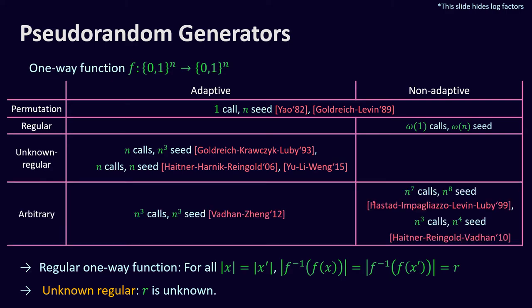Lastly, Hastad, Impagliazzo, Levin, and Luby showed that any one-way function can be used to construct pseudorandom generators. The parameters were improved by Haitner, Reingold, Vadhan, and Wee up to n-cubed calls and n-cubed seed length in the adaptive case, or n-to-the-fourth seed length in the non-adaptive case.